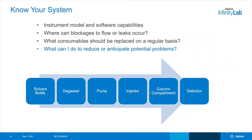Every instrument will have slightly different features, but operates on the same basic LC principles. The flow path for LC instruments starts with the solvent bottle, moving to the pump, injector, column, and then the detector. It's important to understand the flow path components so you can quickly identify where leaks or blockages can occur.